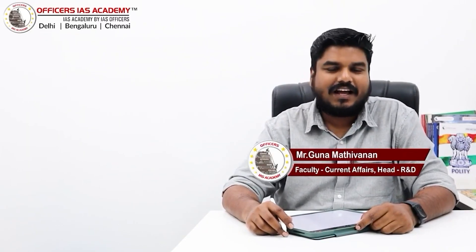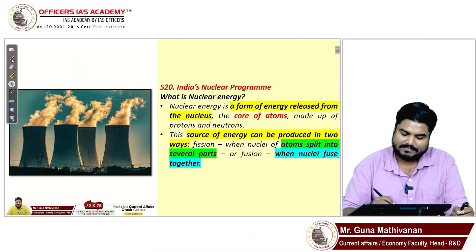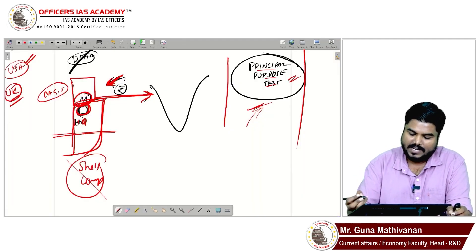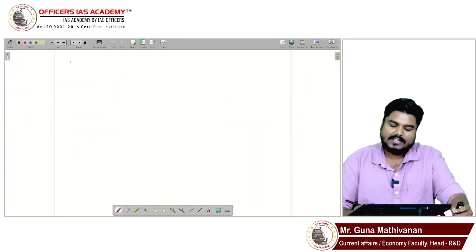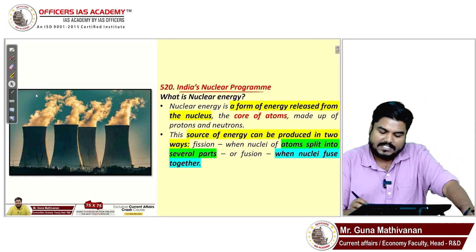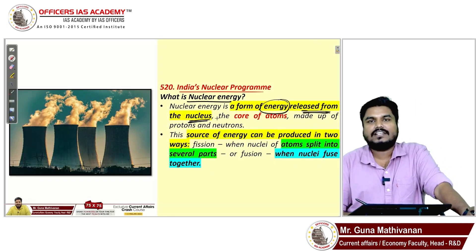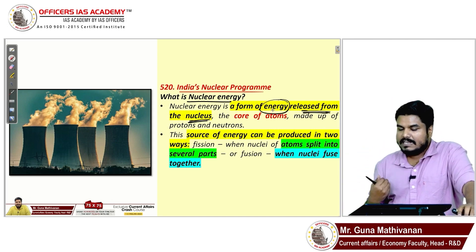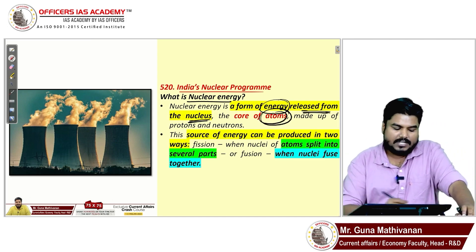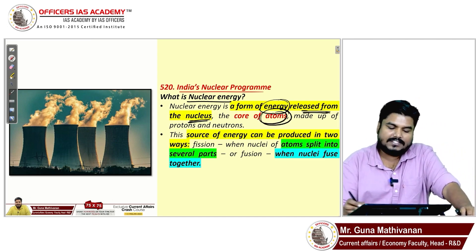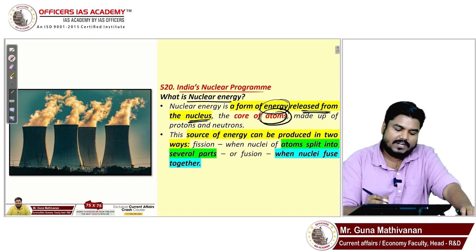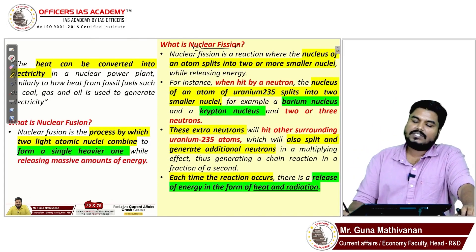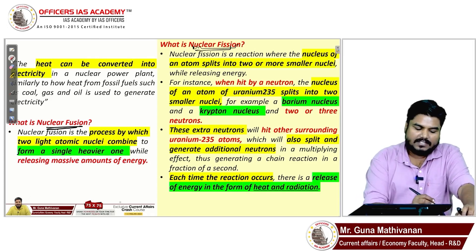In today's video we are going to discuss India's nuclear program. First, let us understand nuclear energy. It is a form of energy that is released from the nucleus of an atom. We have two ways to derive this energy: one is nuclear fission and another is nuclear fusion.